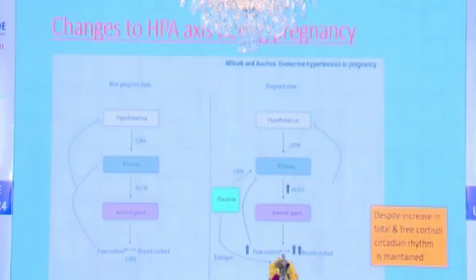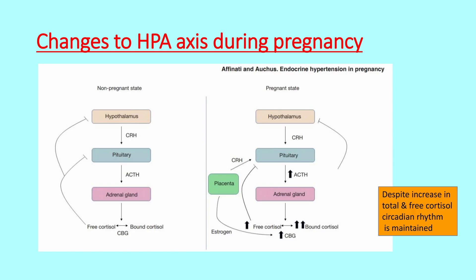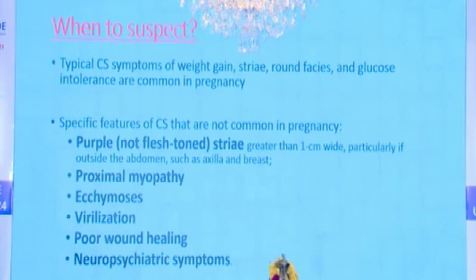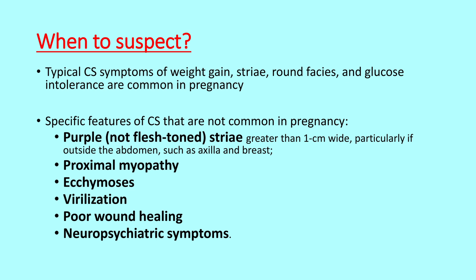Even though all cortisol levels are increased, the normal circadian rhythm maintained in the non-pregnant state is also maintained during pregnancy. When should we suspect Cushing's syndrome in a pregnant lady with hypertension? We use specific features because the usual features like weight gain, striae, and round face are common during pregnancy also. Specific features include purple or pinkish striae (not flesh-colored), wider than 1 cm, proximal myopathy, ecchymosis, spontaneous bruises, virilization, poor wound healing, or neuropsychiatric symptoms.